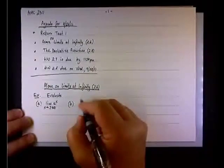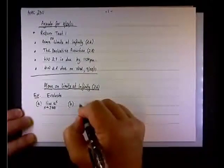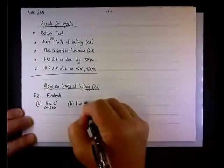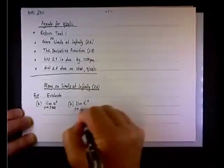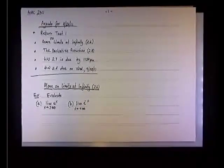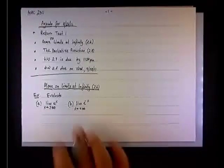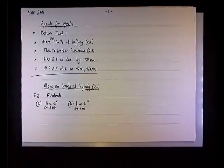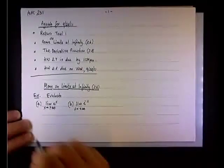Second, let's see what happens when we evaluate the limit of e to the negative x when x approaches plus or minus infinity. Same thing — we need to look separately at positive infinity and negative infinity.